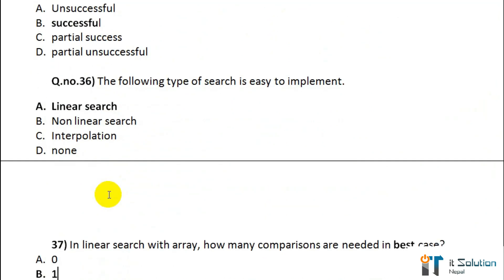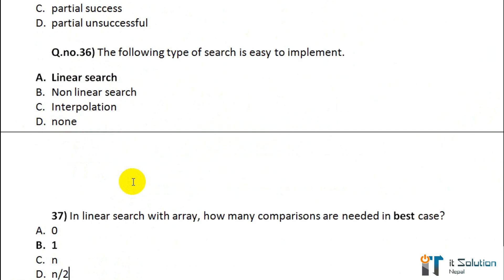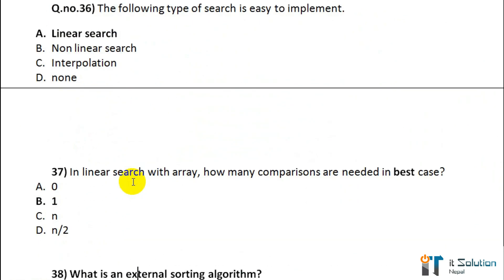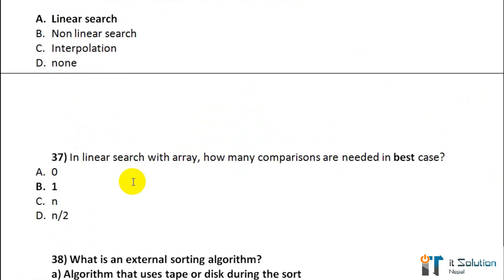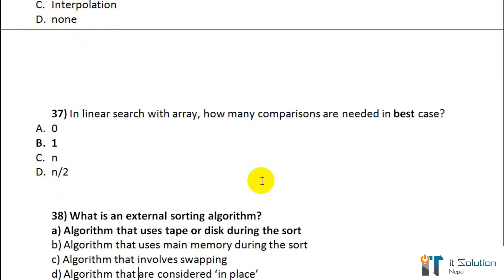Question number 36: Which of the following types of search is easy to implement? Option A — linear search. Question number 37: In linear search with an array, how many comparisons are needed in the best case? Its correct answer is option B.